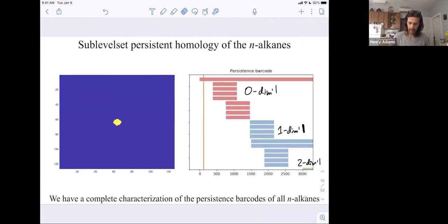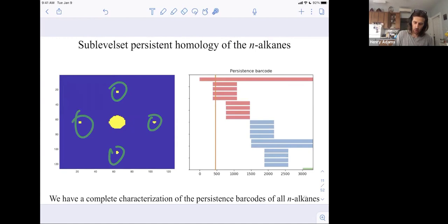So at this energy barrier, I have just a single connected component and that's why this vertical line intersects just one zero dimensional bar. As I add more to my space, I now have five connected components and that's why I intersect five zero dimensional bars.